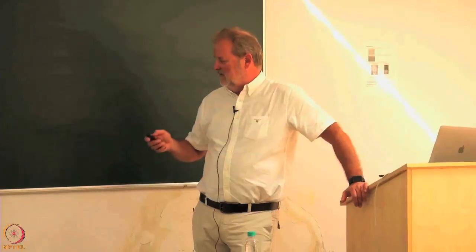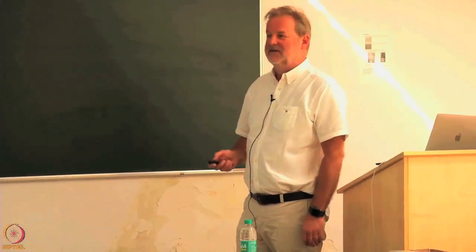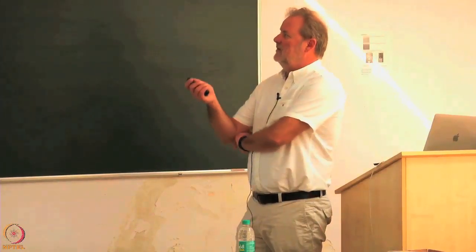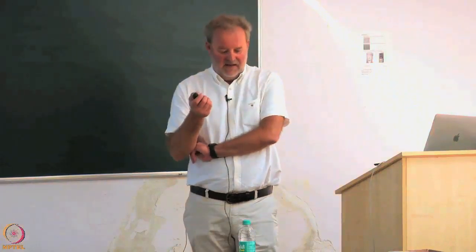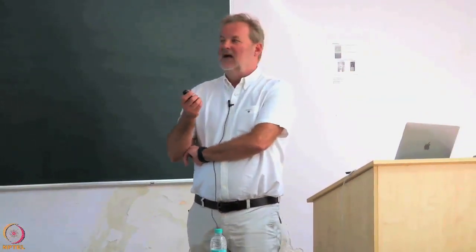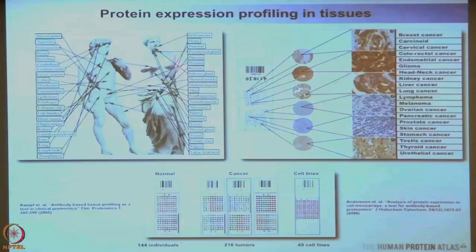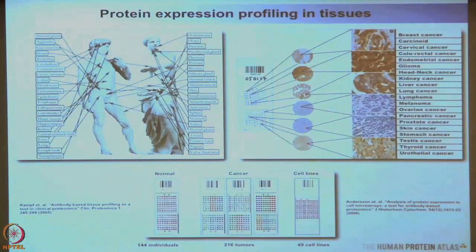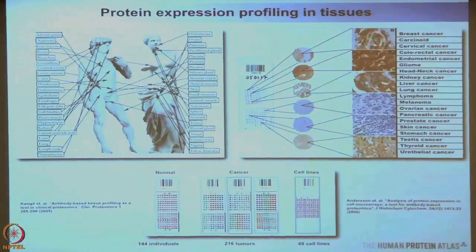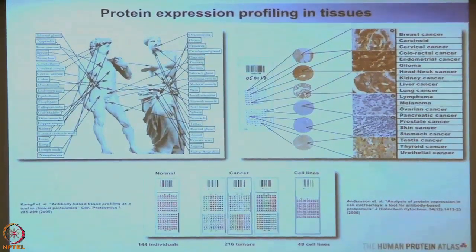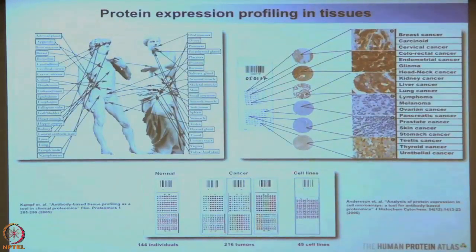For protein profiling we use affinity-purified antibodies against all the different unique proteins that our genome encodes for. We look at how proteins are distributed in all our different organs and tissues. To get a comprehensive view without wasting too much tissue or reagents, we use tissue microarrays, focused on normal tissues, cancer tissues, and also cell lines.